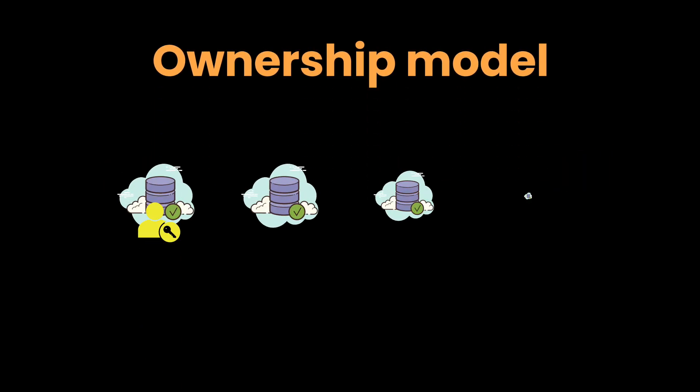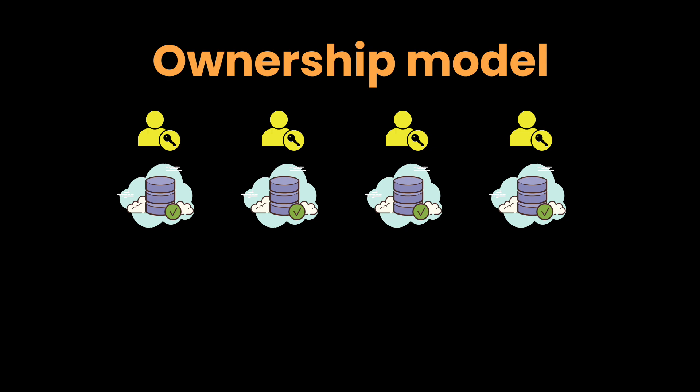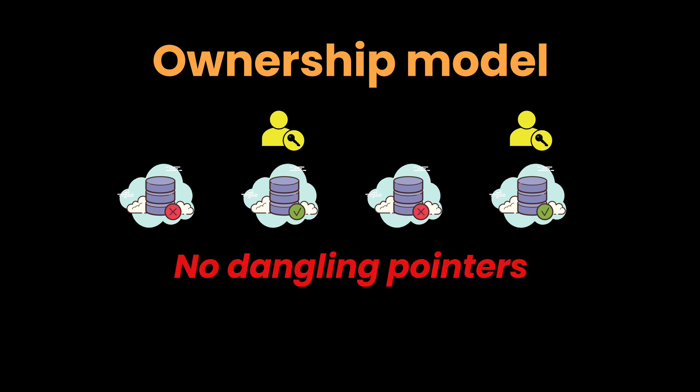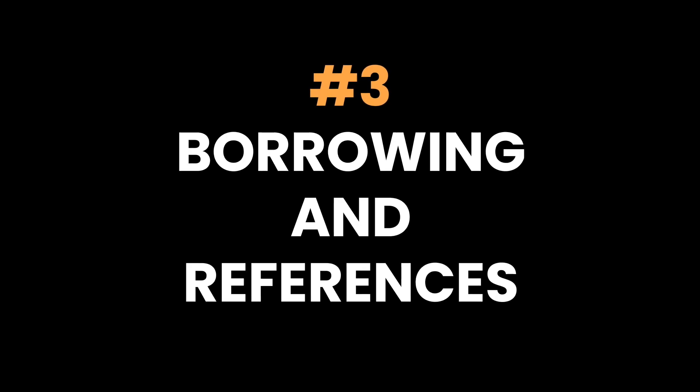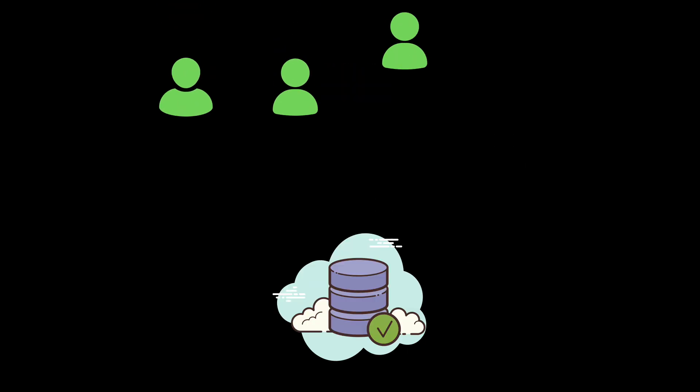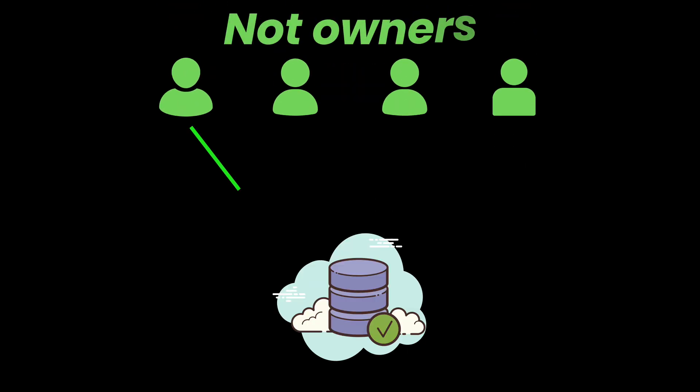Instead, Rust uses a powerful system of ownership and borrowing that checks for potential issues before you even run the program. Two: ownership system. The ownership model is the foundation of Rust's safety. Every piece of data in Rust has a single owner, and when the owner goes out of scope the data is cleaned up — no dangling pointers, no double frees, and definitely no leaks.